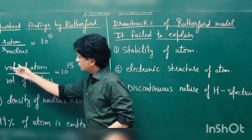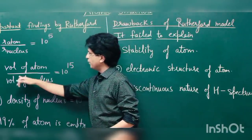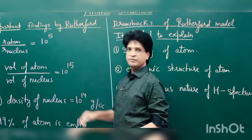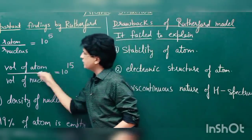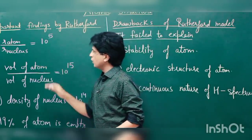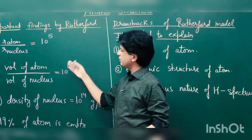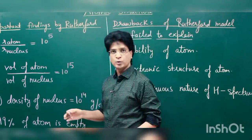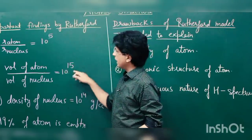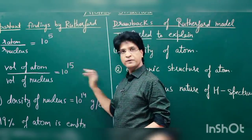He also concluded that the volume of atom upon volume of nucleus is 10 to the power of 15. Since atoms and nuclei are spherical, the volume is proportional to R-cubed. The radius ratio is 10 to the power of 5, and cubing that gives 10 to the power of 15.